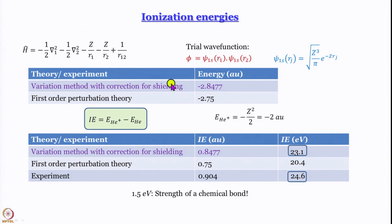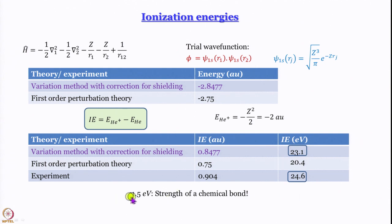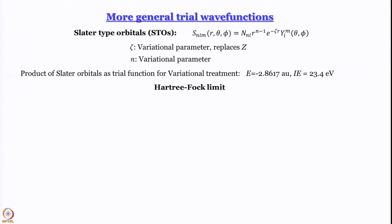Next we said it makes sense to look at ionization energies, because when we look at ionization energies, the fact that we do not have excellent agreement is highlighted a little more. The difference between the number we get using the variational method and the experimental number is about 1.5 electron volts, which is roughly the strength of a chemical bond — so it is non-trivial. There is room for doing better, and in trying to do better one can use more general trial wave functions.